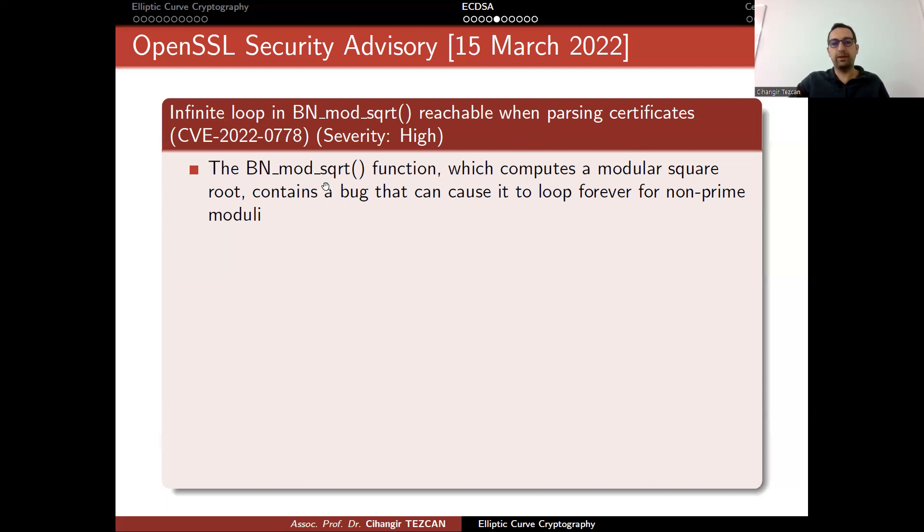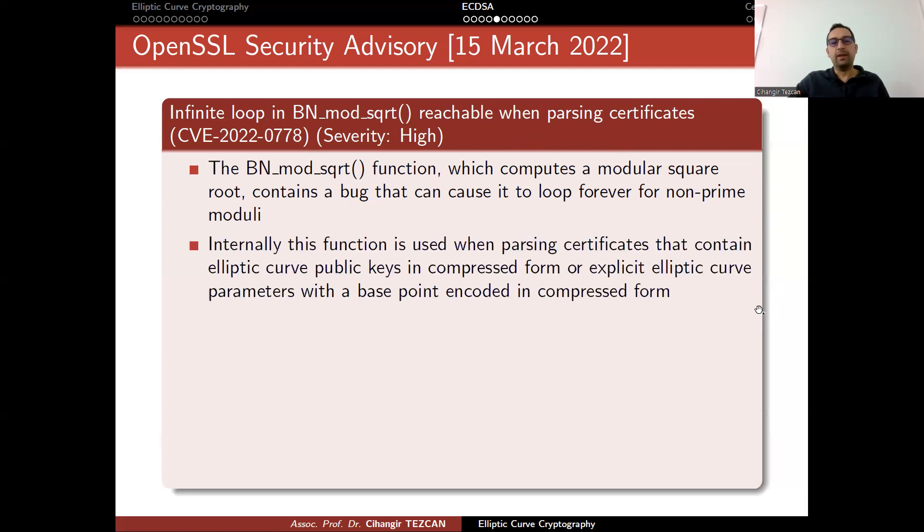You can create an infinite loop when parsing certificates. The idea is as follows. This square root modular function, which computes a modular square root, contains a bug that can cause it to loop forever for non-prime moduli. Internally, this function is used when parsing certificates that contain elliptic curve public keys in compressed form or explicit elliptic curve parameters with a base point encoded in compressed form.